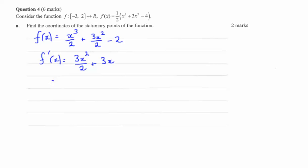Now we're going to set this equal to 0 to find stationary points where the gradient is 0. And then we'll multiply everything by 2, which will give us 3x squared plus 6x to get rid of the fraction.